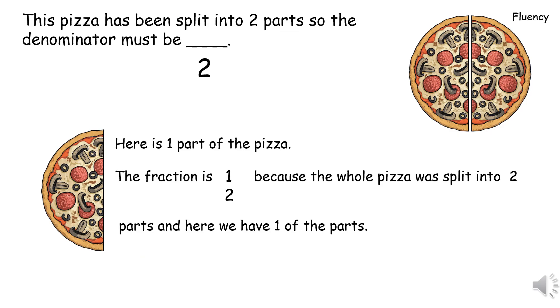This pizza has been split into two parts so the denominator must be two because the whole pizza has been divided into two. Now just below that there is one part of that pizza. The fraction here is one half because the whole pizza was split into two parts and here we have one of the parts.